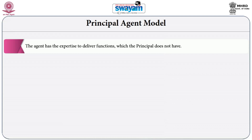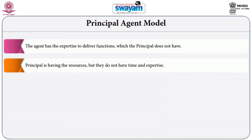The principal assigns certain tasks to be performed by the agent. The agent possesses the expertise, skill, information, and knowledge which is lacking in the principal. Because the principal lacks this knowledge, expertise, and technology, they appoint or choose the agency.